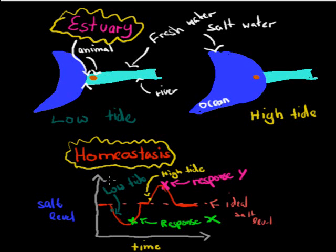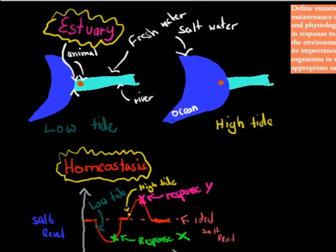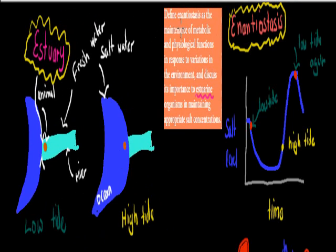Now that's when there's homeostasis, but the actual question asks to define something called enantiostasis. Creatures or animals who do enantiostasis do not actually do homeostasis. It's a different mechanism. You can imagine, this is what happens in an animal that does enantiostasis. You'd have your salt levels, right now it's normal. Then low tide hits, which means low salt levels. It's in fresh water, it's in a lake.